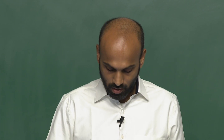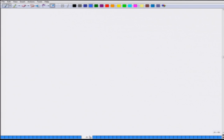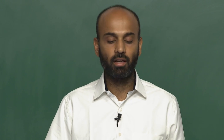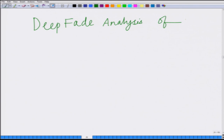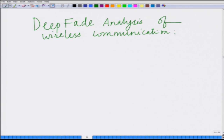What we want to do today is basically understand performance analysis, or intuitively understand the reason behind this poor performance of the wireless communication system. We are going to do a deep fade analysis of wireless communication.